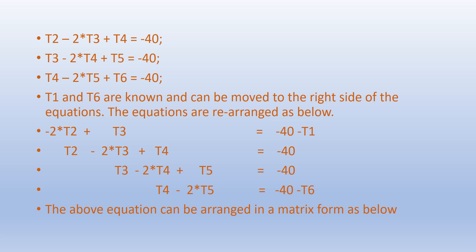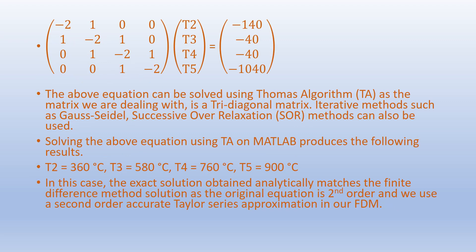The equations are put into matrix form so they can be solved easily. The unknowns T₂ to T₅ can be solved using methods such as the Thomas algorithm, Gauss-Seidel, successive over-relaxation, etc. Solving using the Thomas algorithm in MATLAB produces: T₂ = 360°C, T₃ = 580°C, T₄ = 760°C, and T₅ = 900°C.